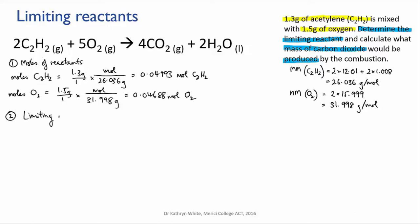Step two is to work out which is the limiting reactant. Now the mole ratio here is two acetylenes to five oxygens. So I put in the moles of acetylene present. Remember I could do that with either reactant and I use that mole ratio to work out how much oxygen would be needed to exactly react with it. And I find that 0.1248 moles of oxygen is needed to completely react with the amount of acetylene that I have.